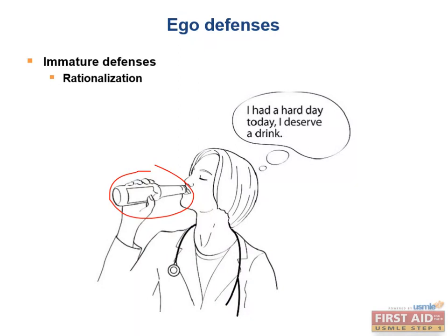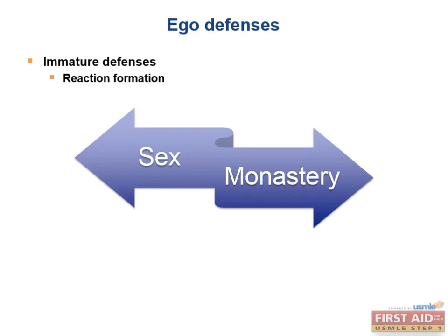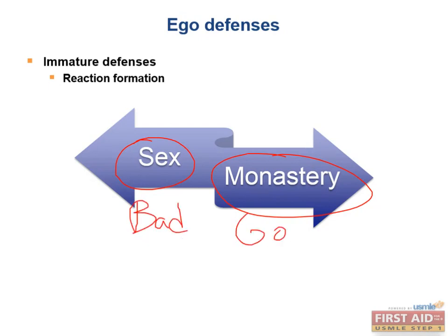The next ego defense is reaction formation, which refers to a process whereby a warded-off idea or feeling is replaced by an unconscious emphasis on its opposite, regardless of whether that opposite aligns with one's value system. For example, a patient who is obsessed with sex may go on to enter a monastery. The person feels guilty about their obsession, concluding that rejecting sex by entering a monastery must be good. Remember that this is an unconscious emphasis on the opposite.